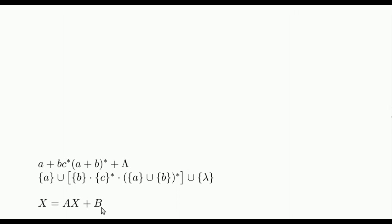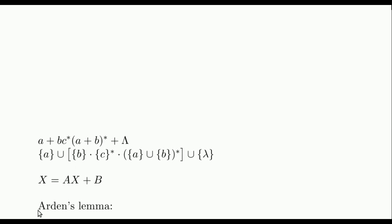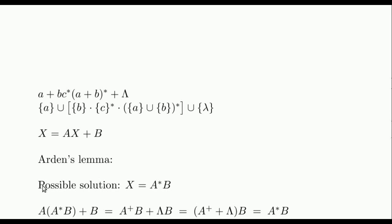Suppose that we have this equation, where A and B are some specific languages, and X is a variable whose range is in the languages. We want to know the solutions of this equation, that is, the languages such that, when replacing X with one of them, this equality becomes true. Arden's Lemma shows how to handle this kind of equation in three steps.